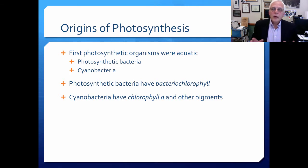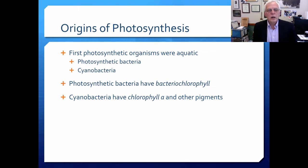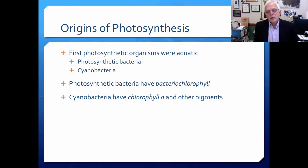In order to think about where these aquatic plants came from, we have to talk about the origins of photosynthesis. The first photosynthetic organisms were aquatic, of course, because it was this great soup covering the planet. The first photosynthetic organisms were probably photosynthetic bacteria and things like cyanobacteria, which are in fact photosynthetic bacteria. The photosynthetic bacteria have bacterial chlorophyll, and the cyanobacteria have chlorophyll A and a variety of other pigments.